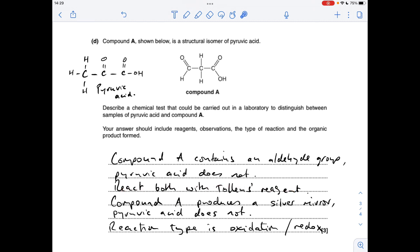Compound A will produce a silver mirror because of the aldehyde group, whereas pyruvic acid won't. The reaction type is, you could either say oxidation because the aldehyde group is oxidised to the carboxylic acid group, or you could call it a redox reaction because, like I've just said, we've got an oxidation process of the aldehyde group. The reduction process is the silver ions in the Tollens reagent, they get reduced to silver atoms, and that's the silver mirror.